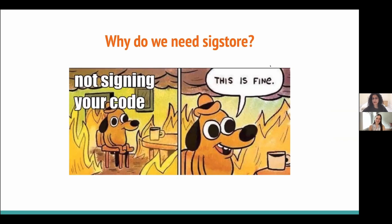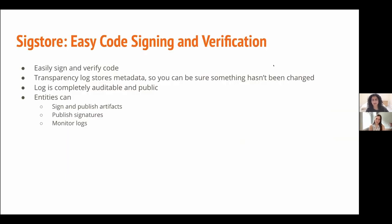So why do we need SIGSTOR? As everyone here is probably aware, we as a community have a problem with supply chain security. What SIGSTOR is looking to do is find a way to securely distribute all the pieces involved in that — including the software itself, as well as things like SBOMs and other information that needs to be securely distributed. It provides a set of tools and services for easy code signing and verification, all backed by a transparency log that is completely public and auditable, storing all metadata in a public place so you can make sure nothing's been changed. Entities in SIGSTOR can sign and publish artifacts, publish signatures, and monitor logs in this transparency log.